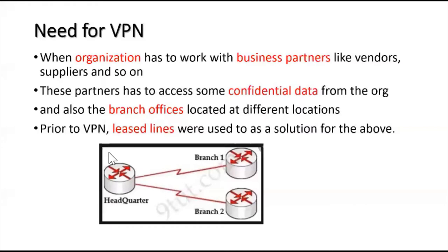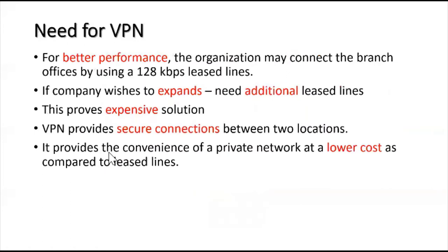This leads to disadvantages. For better performance, the organization may connect the branch office using a 128 KBPS lease line, so the bandwidth for that lease line is 128 KBPS, making the transfer of information faster. But if the company wishes to expand, they need additional lease lines, which proves to be an expensive solution. So lease lines proved to be very expensive.